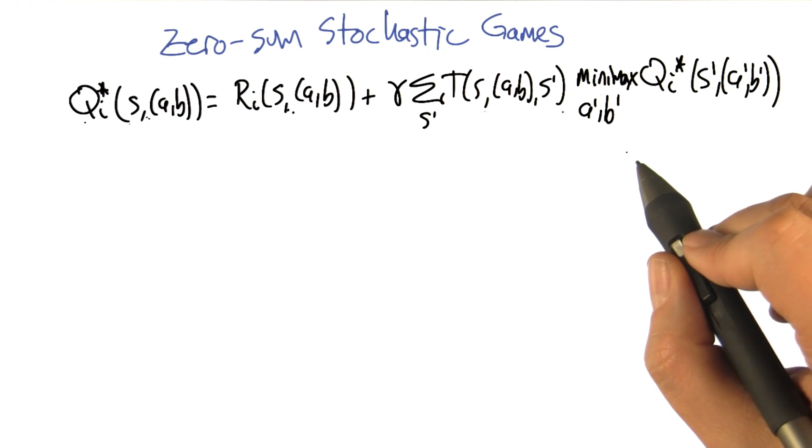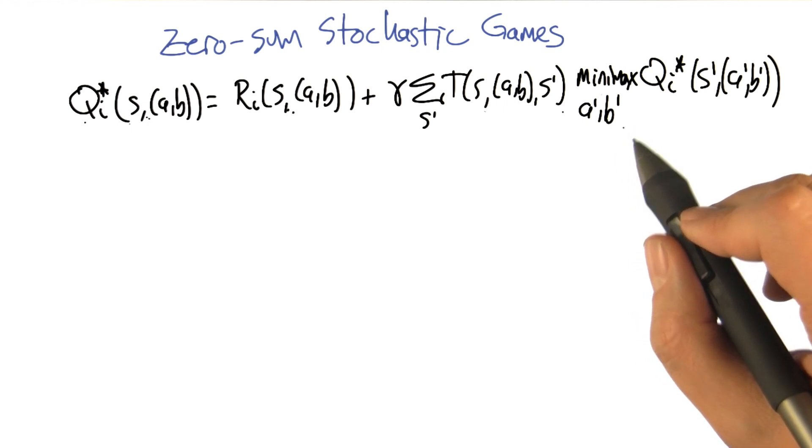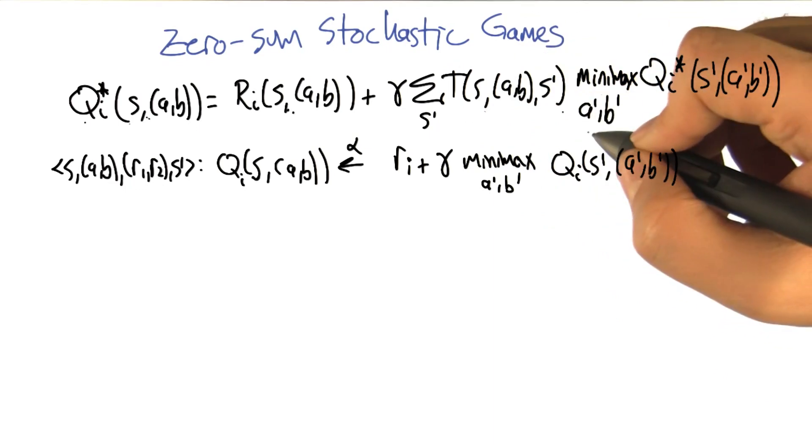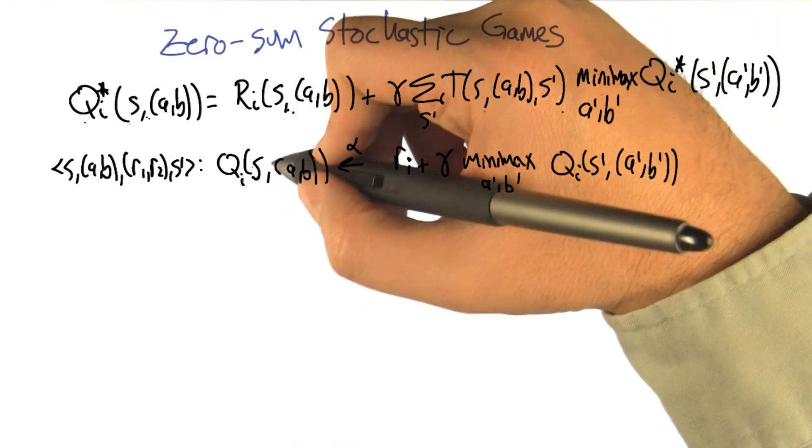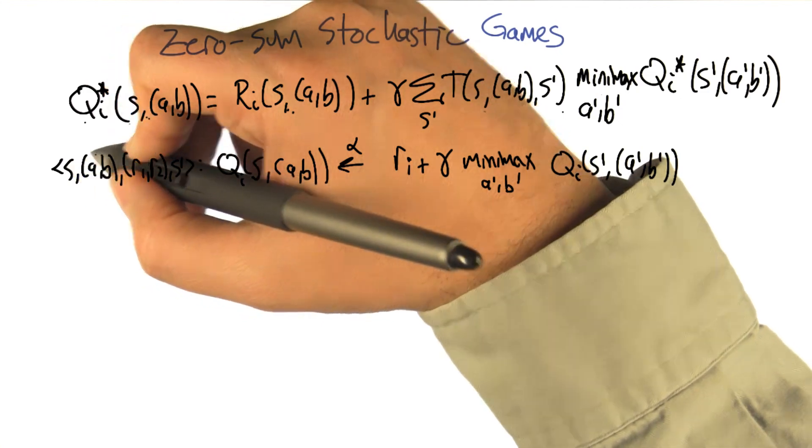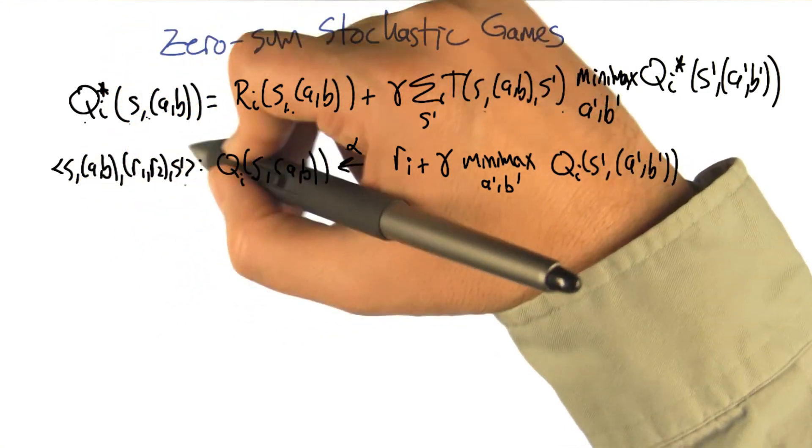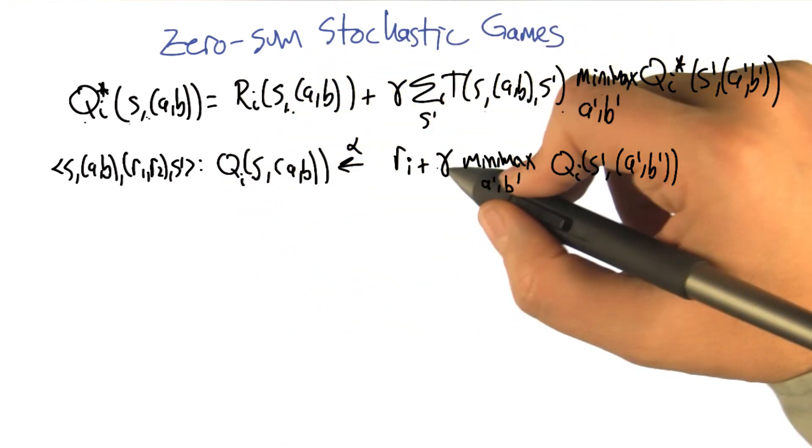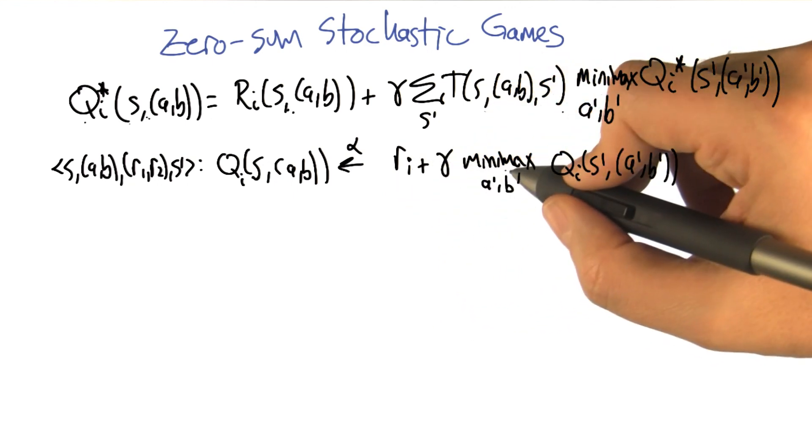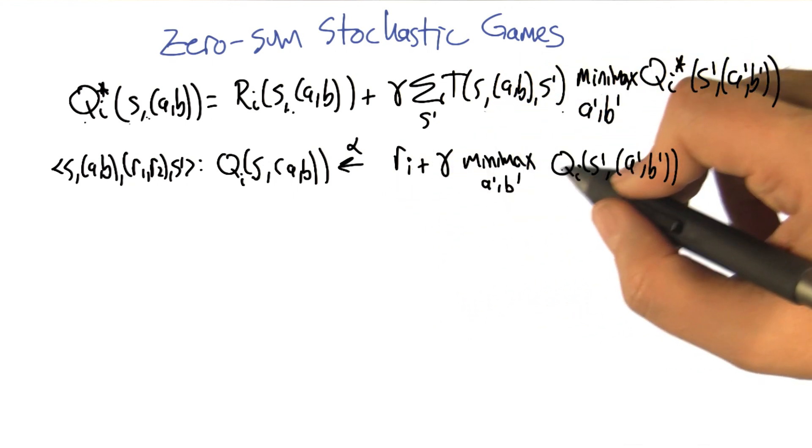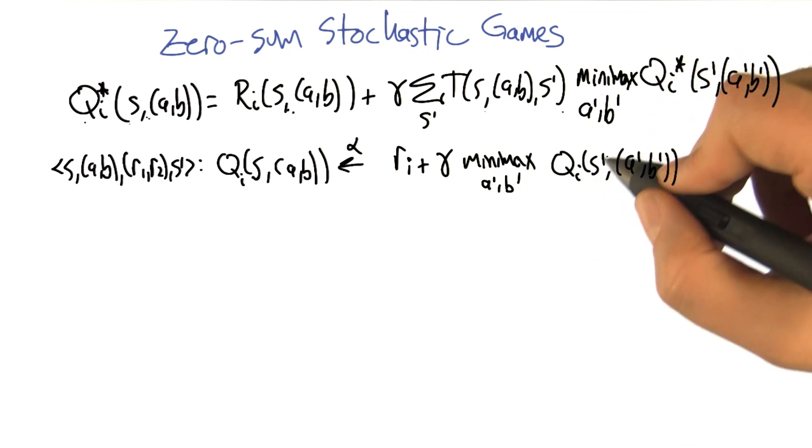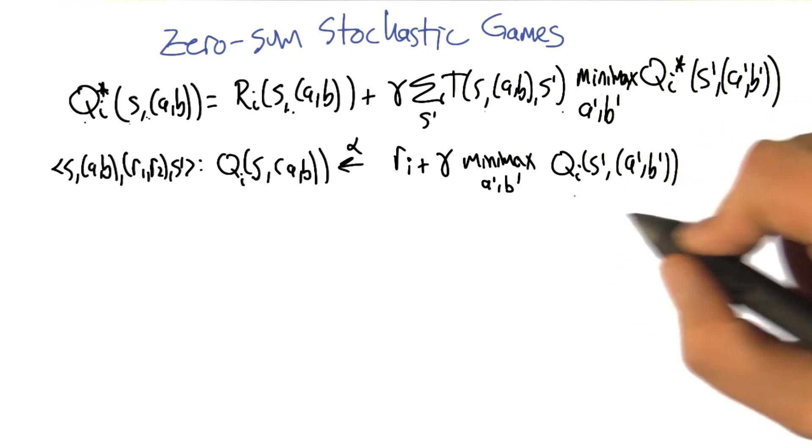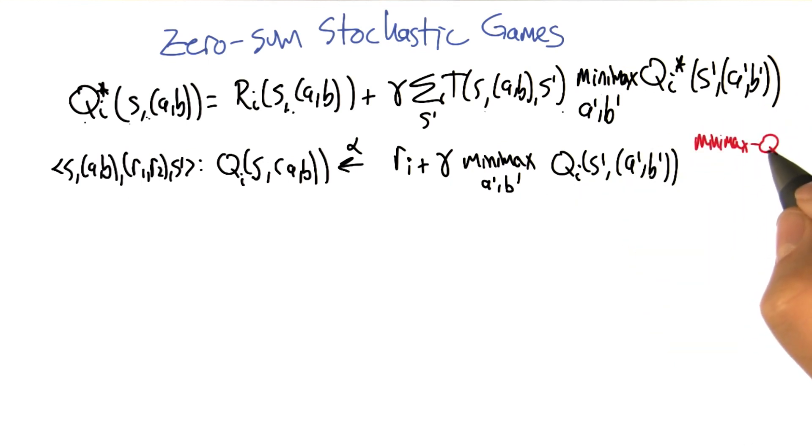So we've got this modified Bellman equation, and we can even translate it into a form that's like Q learning. So the analog of the Bellman equation and the Q learning update in this setting would be that if we're in some state, there's some joint action that's taken, there's some pair of rewards that comes in some next state that's visited, that the Q value for that state joint action pair is going to be updated to be closer to the reward for player I plus the discounted summarized value of the new state S prime. And we'll use minimax to summarize what the values are in that new state. And that equation is sometimes referred to as minimax Q. Because it's like the Q learning update, but just with the minimax operator instead of a max. That makes sense.